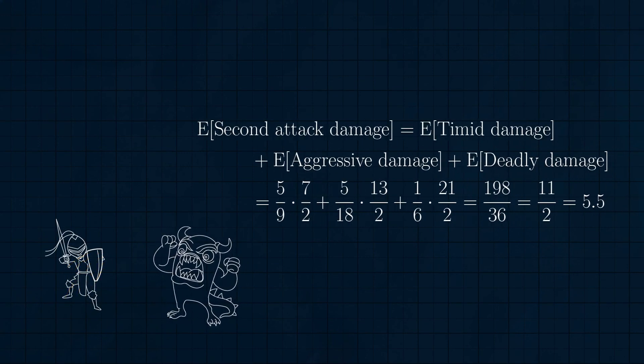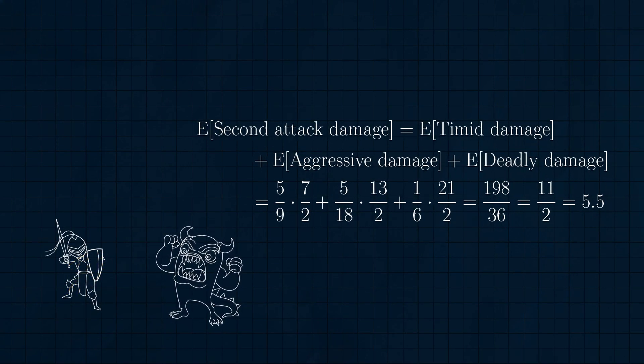This makes sense. The only amount of damage we've seen it deal was a measly 4, which is evidence that it is a weaker monster. Consider the counterfactual case where the monster had dealt 16 damage on its first attack — that would be proof that it was a deadly monster, since 100% of damage-16 attacks are done by deadly monsters. With damage 4, all three types of monster are possible, but the majority of damage-4 attacks are dealt by timid monsters because their damage distribution is concentrated between 1 and 6. So with these updated probabilities, the expected value of the second attack's damage is 5/9 times 7/2 plus 5/18 times 13/2 plus 1/6 times 21/2, or 11/2, or 5.5.